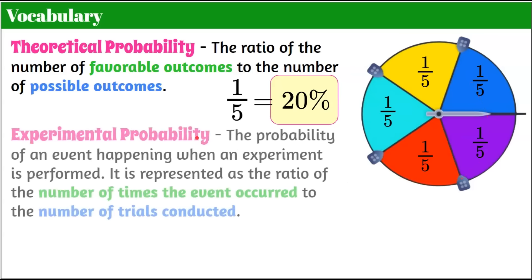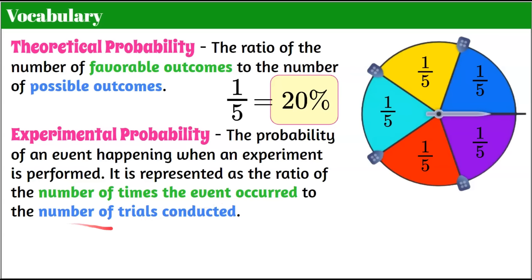Now let's define experimental probability. That is the probability of an event happening when an experiment is performed. It is represented as the ratio of the number of times the event occurred to the number of trials conducted. You would sit and spin the spinner a bunch of times, tally how many times it landed on each color, and that ratio would be your experimental probability.